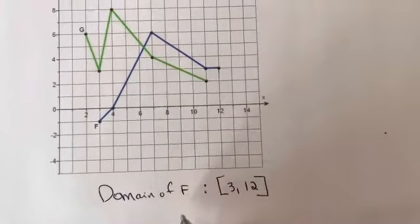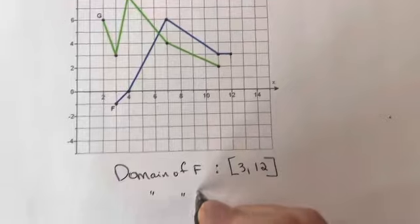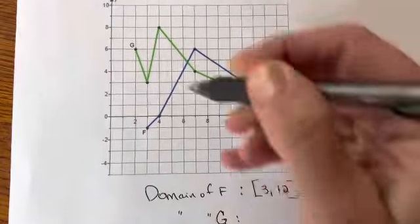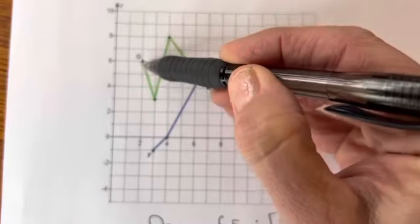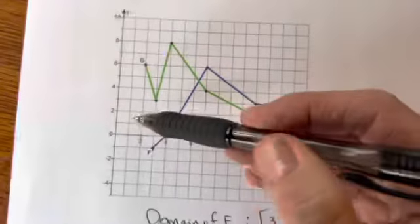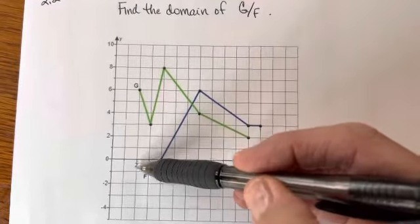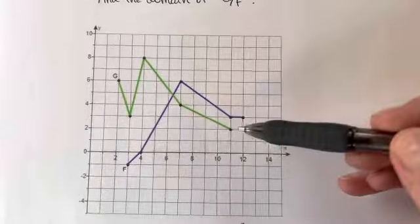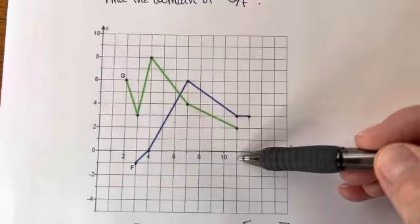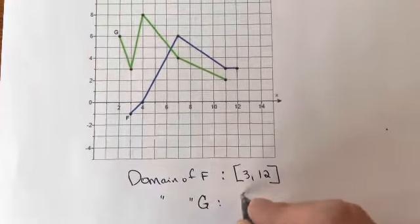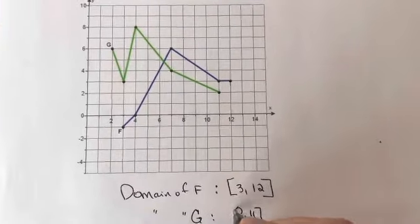So the domain of g—I'm going to be lazy right here and just do my little tick marks. Look at g. g is this green line. g starts right here at 2, and it goes all the way to 11. So my domain of g is 2 to 11. And again, those are closed points.